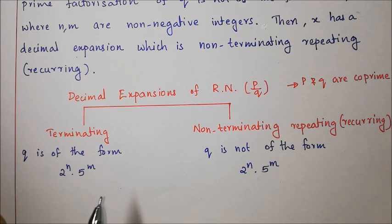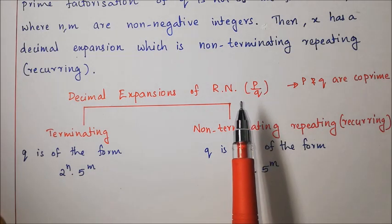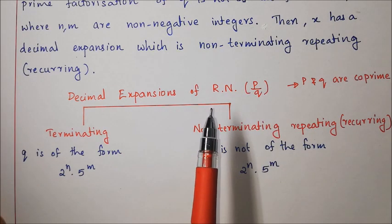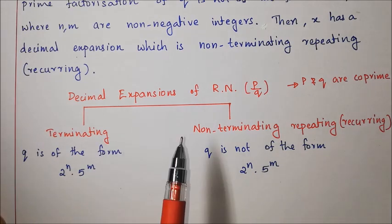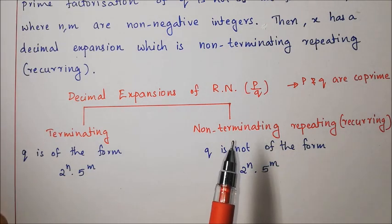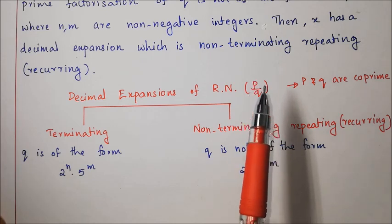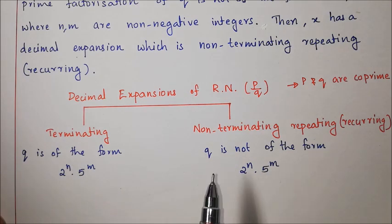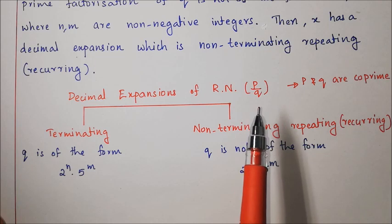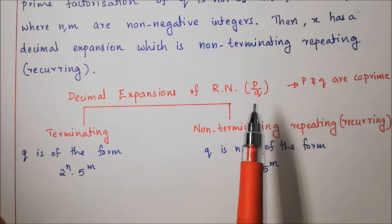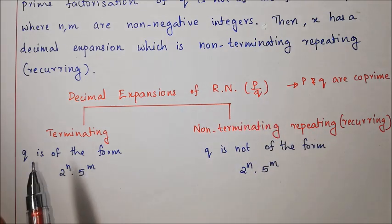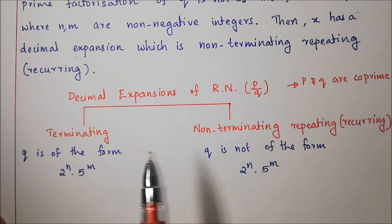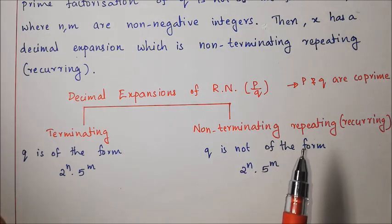What is the use of these theorems? If we have a rational number p by q, instead of dividing p by q to determine if the decimal expansion is terminating or non-terminating, we can simply do the prime factorization of q and find out the form of q — and decide without performing the long division.